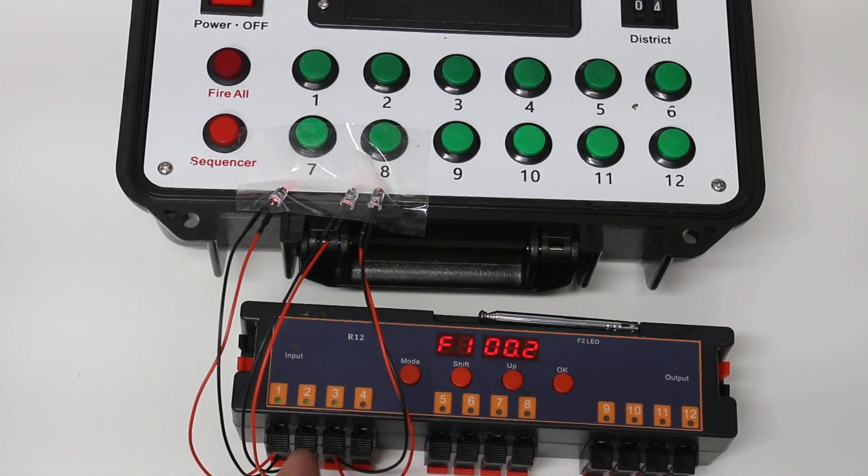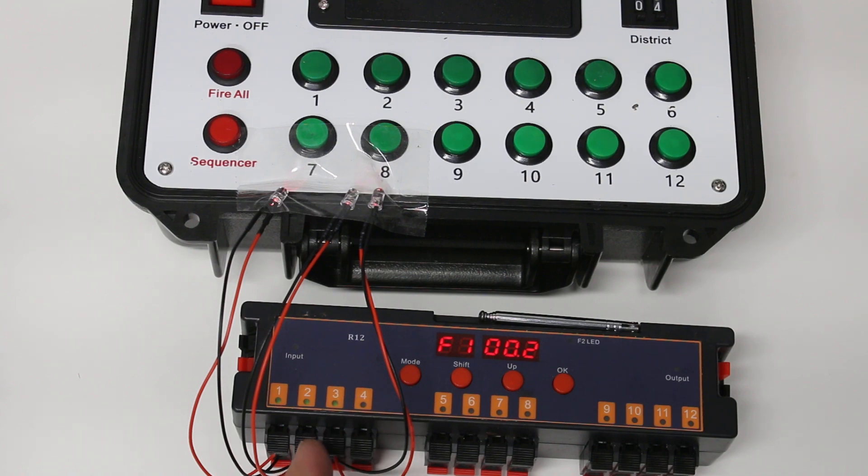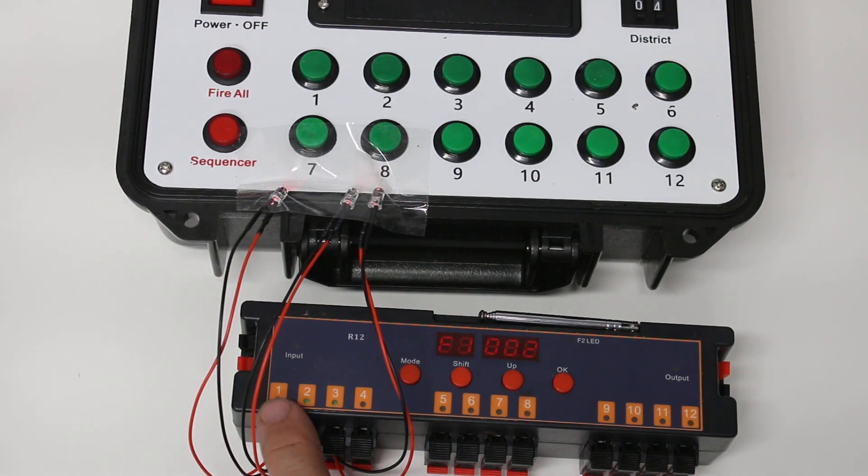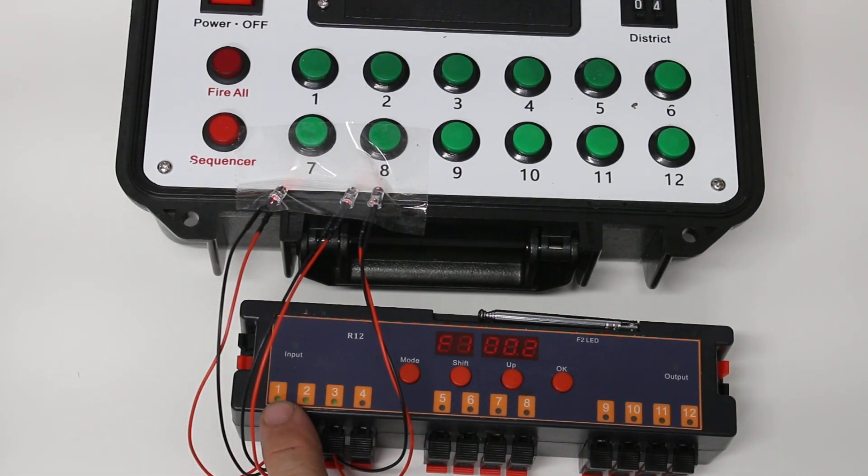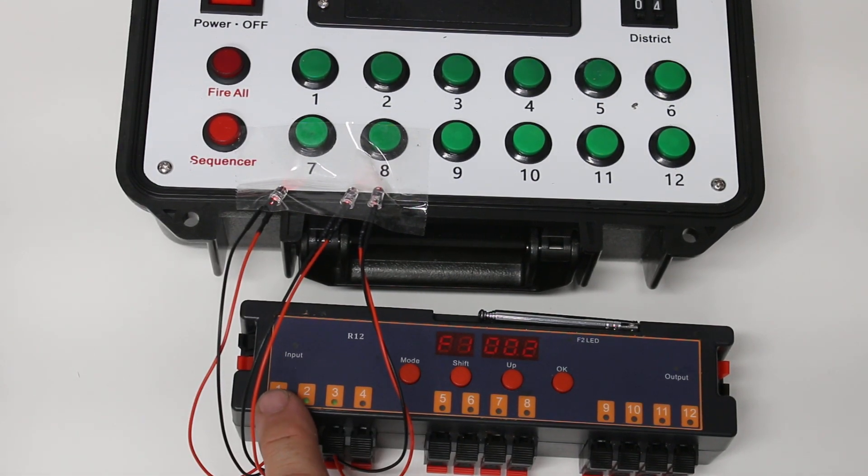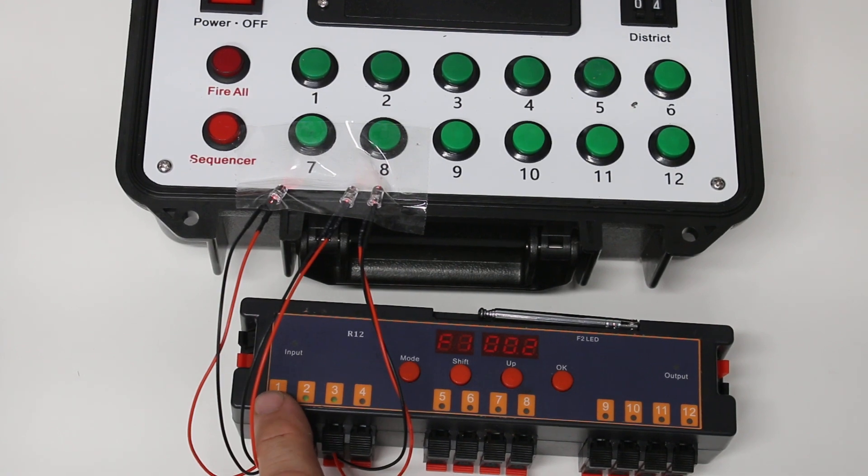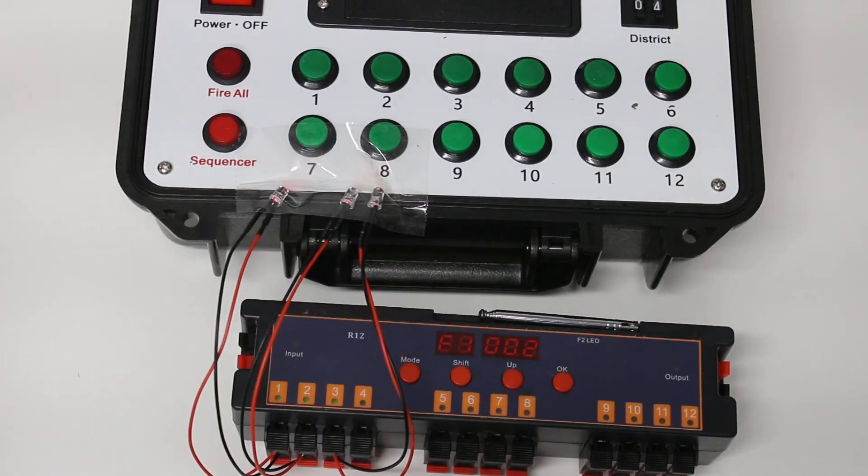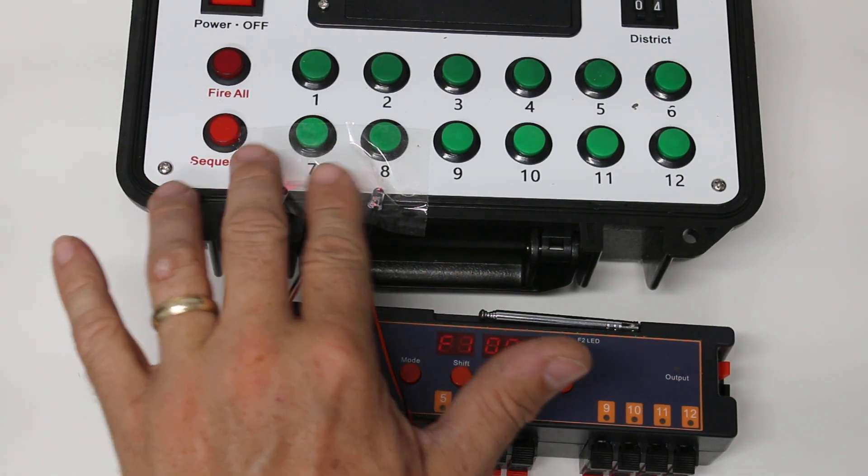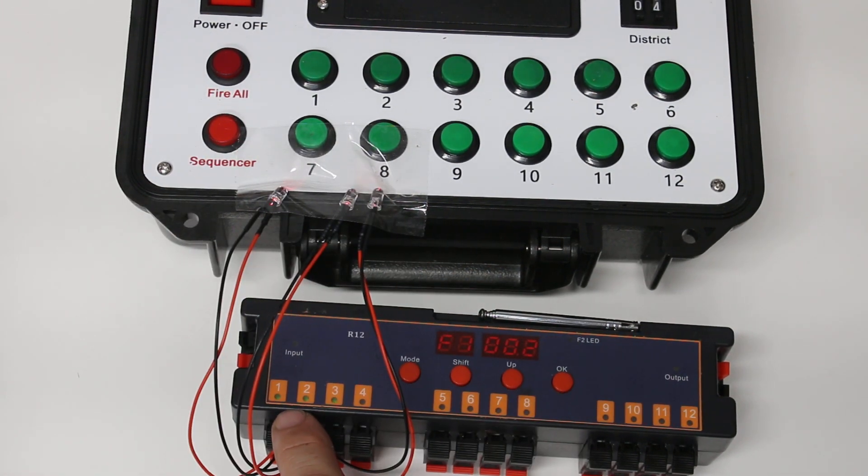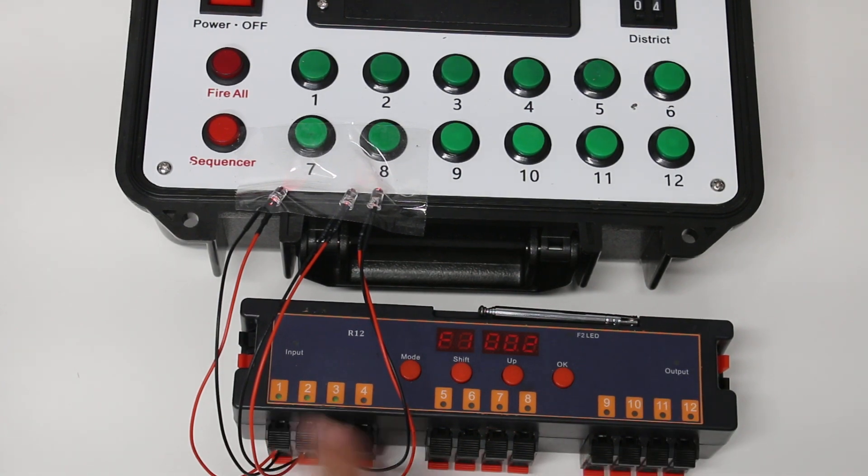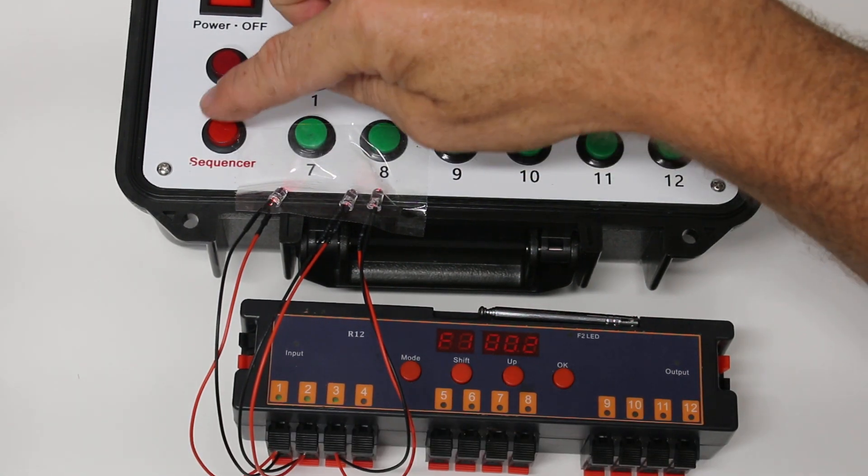In this case, notice here, mode on F1, it's set to 0.2 seconds. So when I hit sequence, every 2 tenths of a second, this is going to go off for the whole entire unit. As soon as I hit sequence, it will fire the first Q. There is no timing for the first one. When I hit this button, it's going to go off.